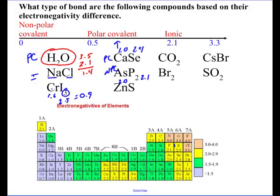For zinc sulfide, zinc is 1.6, sulfur is 2.5. Difference, 0.9. Polar covalent. So you can see the idea. I don't want to work on the rest of those. But that's the idea.